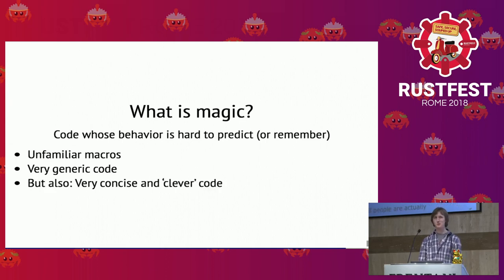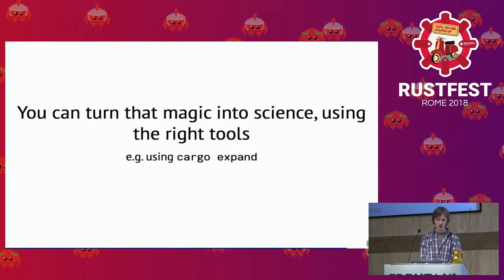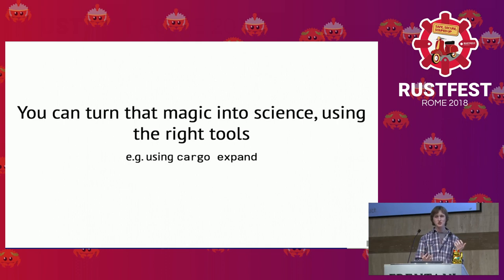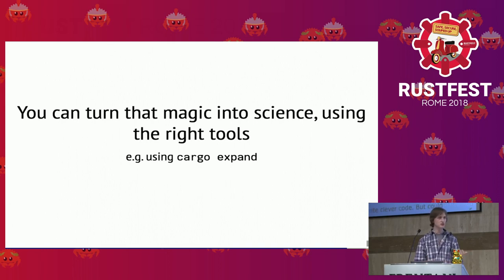You can turn magic into science if you have the right tools. For example, 'cargo expand' will give you the output of what rustc will actually compile after expanding all your macros. You can take the structopt example, paste it into your editor, run cargo expand, and see how it generates clap code underneath — code you didn't have to write, but code that will be there and that you can read if you want to.